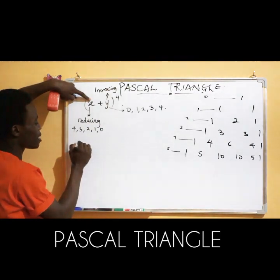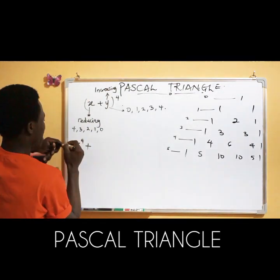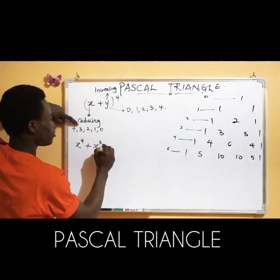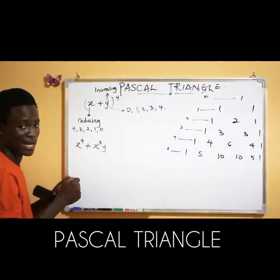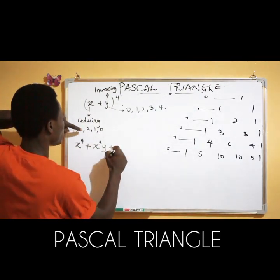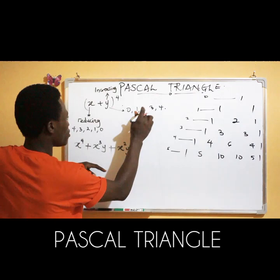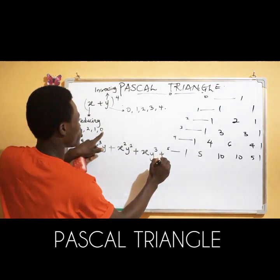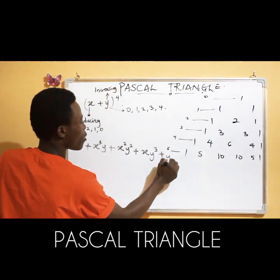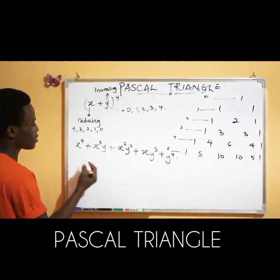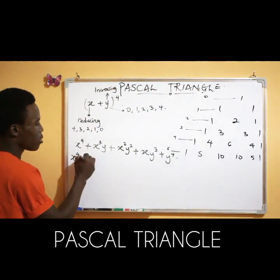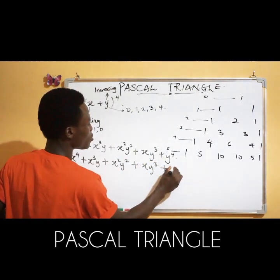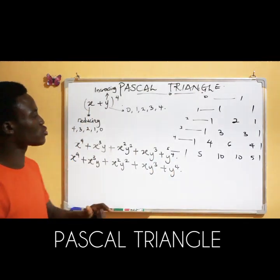Following that pattern: the first term has x to the power four (y is zero so y is not included). The second term has x to the power three, y to the power one. The third term has x to the power two, y to the power two. The fourth term has x to the power one, y to the power three. The fifth term has x to the power zero — so no x — and y to the power four. Summing these up: x⁴ + x³y + x²y² + xy³ + y⁴.